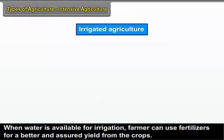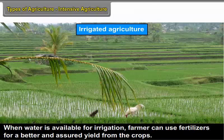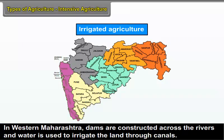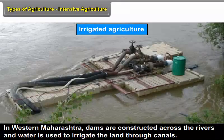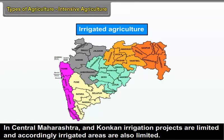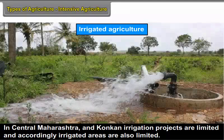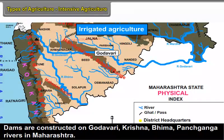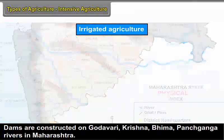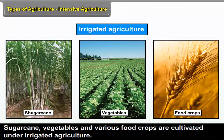When water is available for irrigation, farmers can use fertilizers for a better and assured yield. In western Maharashtra, dams are constructed across the rivers and water is used to irrigate the land through canals. In central Maharashtra and Konkan, irrigation projects are limited and accordingly irrigated areas are also limited. Dams are constructed on the Godavari, Krishna, Bhima, and Panchaganga rivers. Sugarcane, vegetables, and various food crops are cultivated under irrigated agriculture.